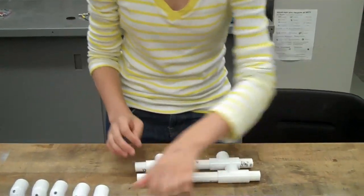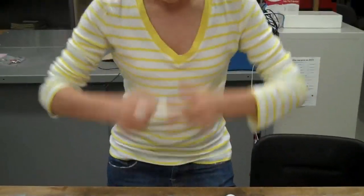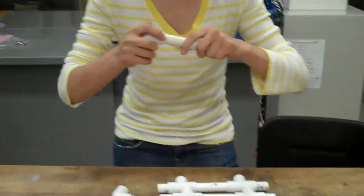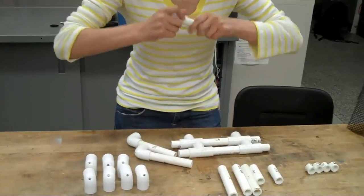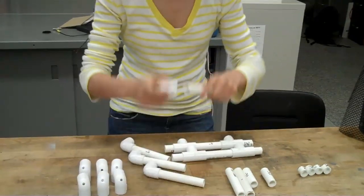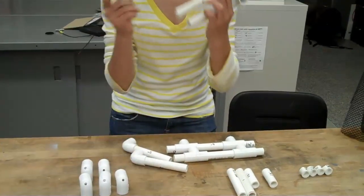Now, we're going to take the five-inch pieces and put one of these joints on the end of every single piece. For two of these pieces, you'll need to add another one of these on the other end.